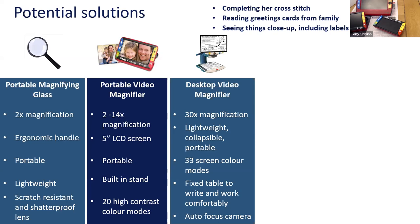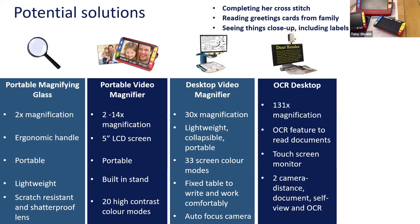The desktop video magnifier offers 30 times magnification. Some are lightweight, collapsible, and portable with a 12 or 15-inch screen; the one in the image is very much a desktop unit that stays on the table. It has 33 screen colour modes, an XY table, and an auto-focusing camera. The next desktop model features OCR — optical character recognition — which takes a snapshot of the page and reads it back to you, giving you audio output in addition to screen magnification.